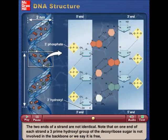The two ends of a strand are not identical. Note that on one end of each strand, the three-prime hydroxyl group of the deoxyribose sugar is not involved in the backbone, or we say it's free.